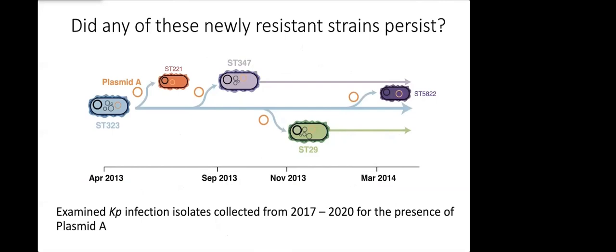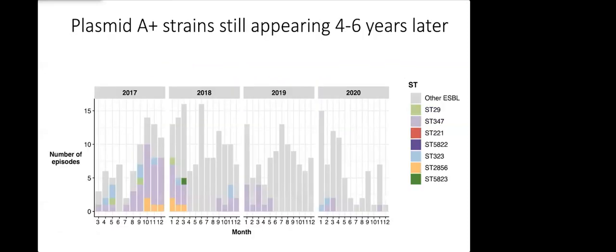We had a collection of all Klebsiella infection isolates from the same hospital that spanned from 2017 until 2020. We had a look in these isolates to see if we could find plasmid A. Here again I'm showing each bar is showing the total number of ESBL episodes per month from 2017 through to 2020 and the bar is colored if that particular episode is carrying plasmid A.